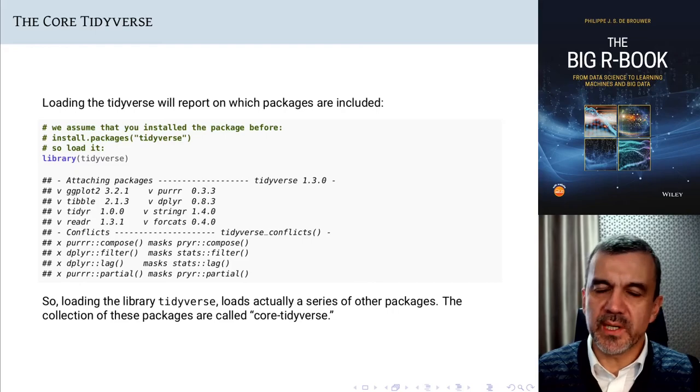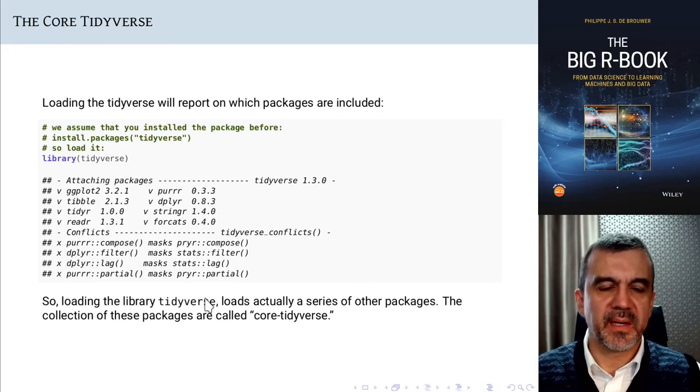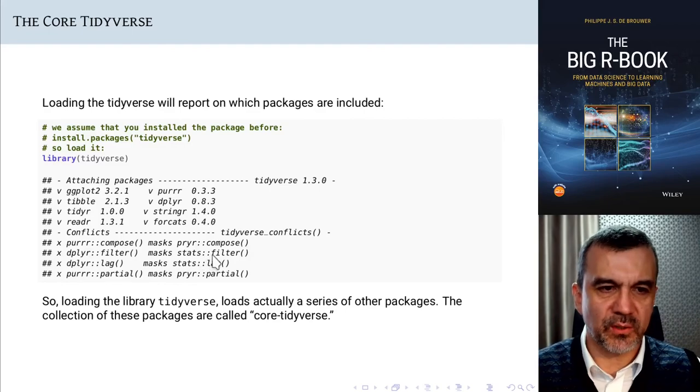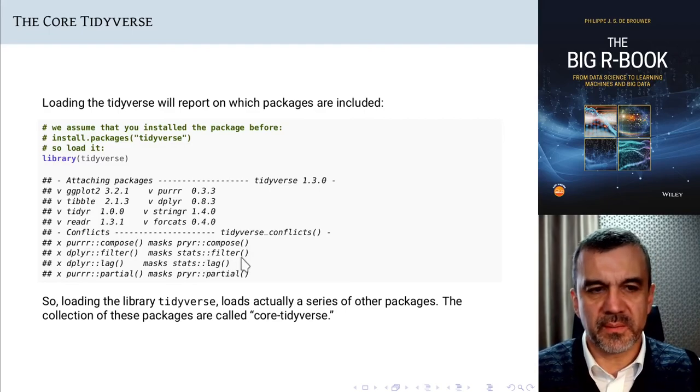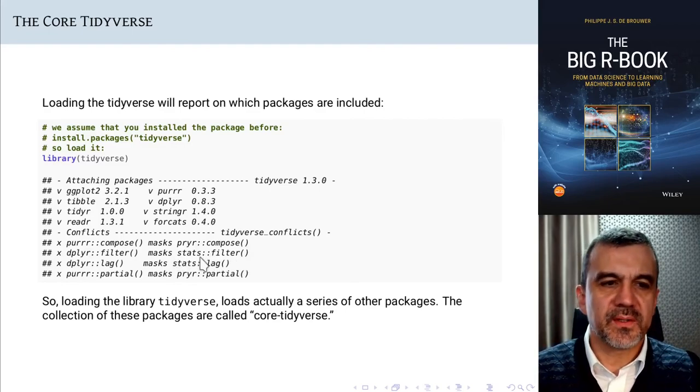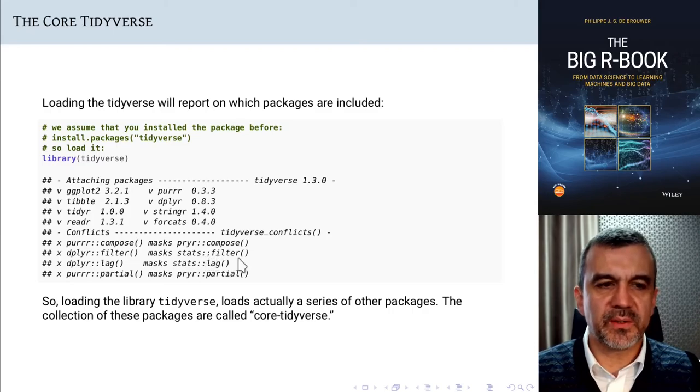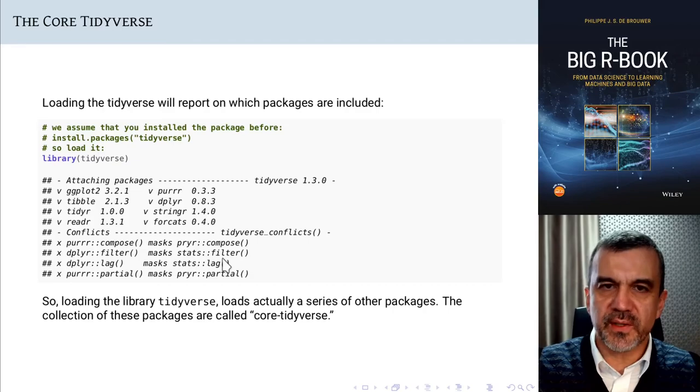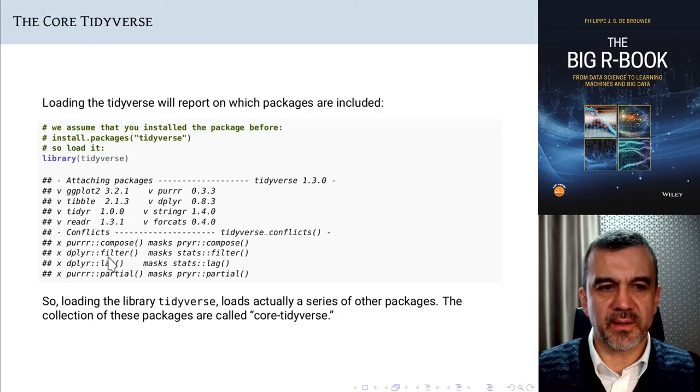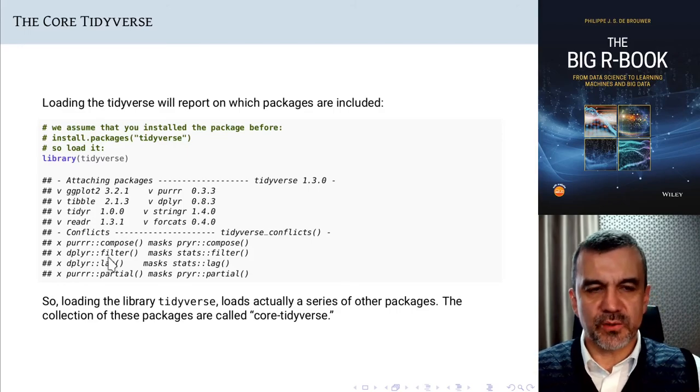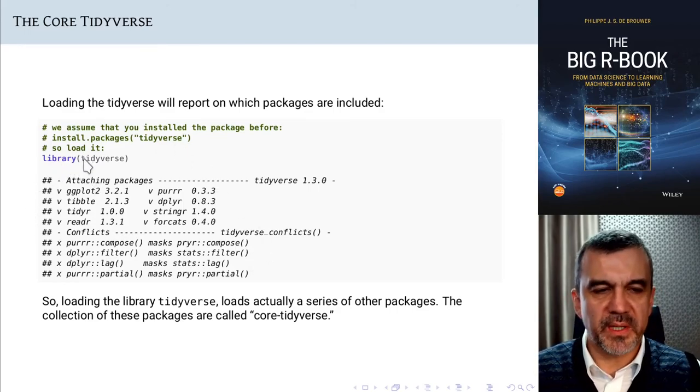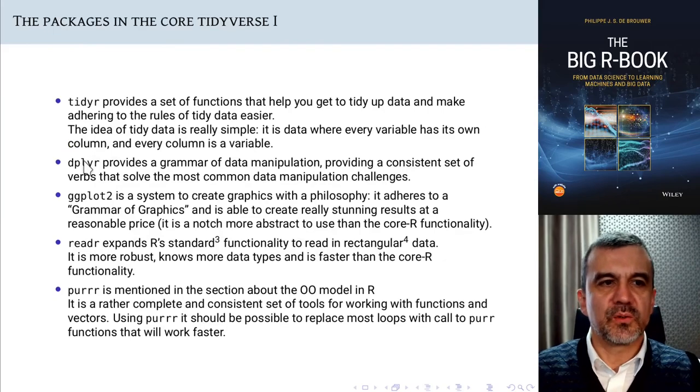You will get a weird error message, hard to debug. And so, the way to solve it is to replace the line or the keyword filter with stats::filter. That will force R to look for the function filter within the package stats and not default to the one that sits in dplyr. Right. So we have loaded the tidyverse. We have the base functionality available. So far, so good.